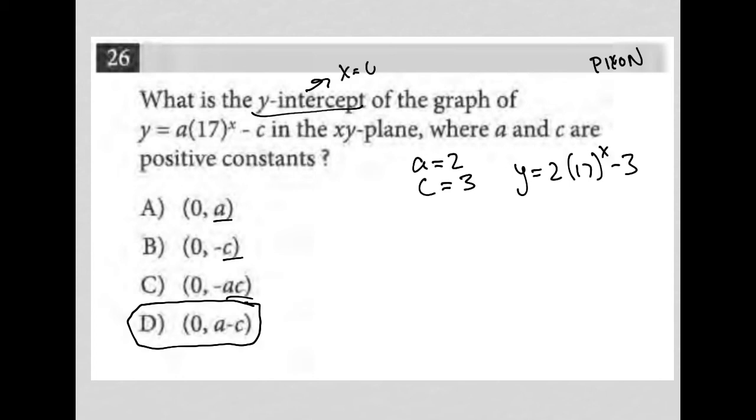If I'm looking for the y-intercept, that always means that x equals 0. So I can say, okay, well, when x equals 0, I end up with that becomes 1, because 17 to 0 is 1. 2 times 1 is 2, and 2 minus 3 is negative 1, so I get y equals negative 1. So I'd have 0, negative 1 as my y-intercept.